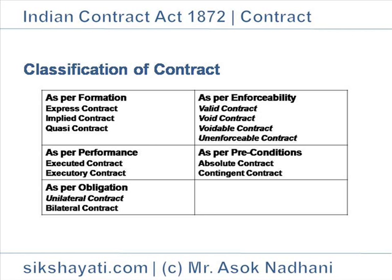Unenforceable Contract: this contract fulfills all requirements except legal formalities. A contract which fulfills all the requirements of a contract except some technical requirements is called an unenforceable contract. If the legal formalities required by some other act are not fulfilled — that is, where an agreement is not made in writing, or is not stamped, or is not registered when so required — the contract is said to be unenforceable. When the deficiency is subsequently removed, i.e., legal formalities are fulfilled, it becomes enforceable.